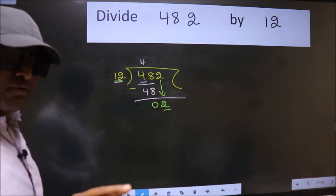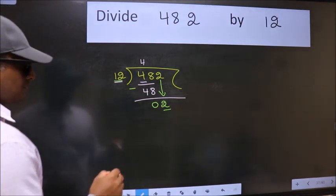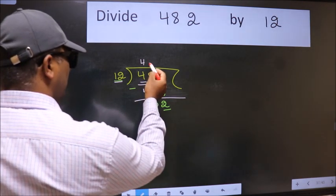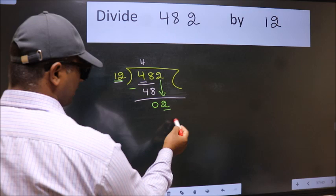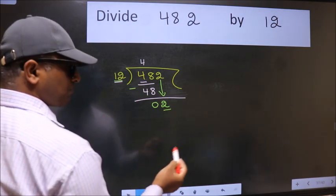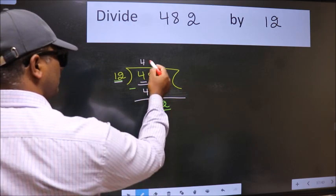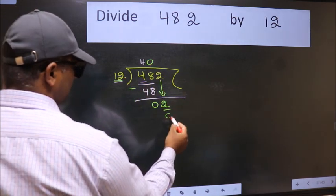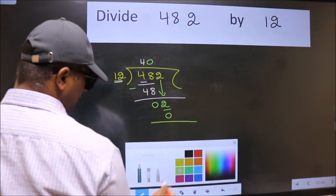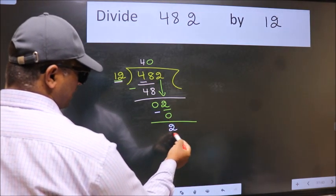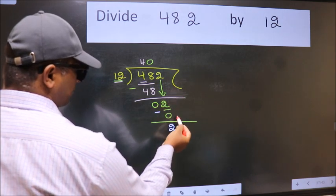Instead of that, what we should think of doing is, which number should we take here? If I take 1, we will get 12. But 12 is larger than 2. So what we do is we take 0 here. So 12 into 0 is 0. Now we subtract. We get 2. Over here we did not bring any number down.